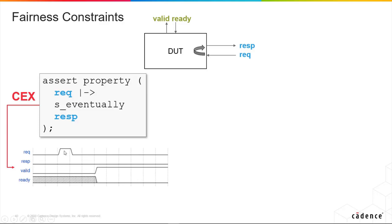But what will probably happen is we observe a counterexample like this. So this is what the counterexample would look like, a request here, and response getting held low forever. That's a false failure because the design is waiting for a ready.